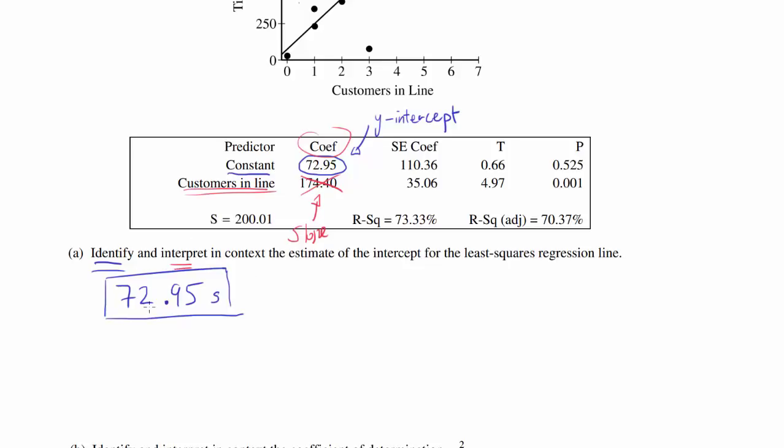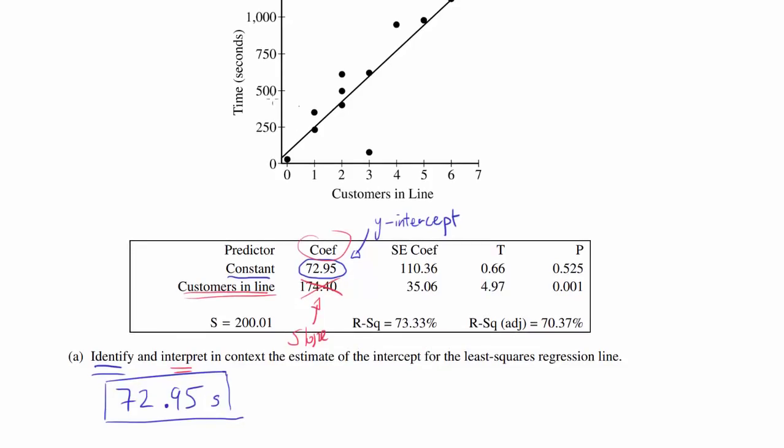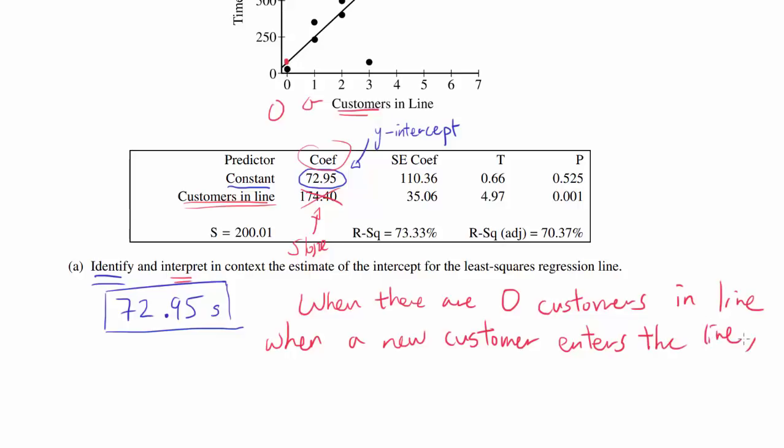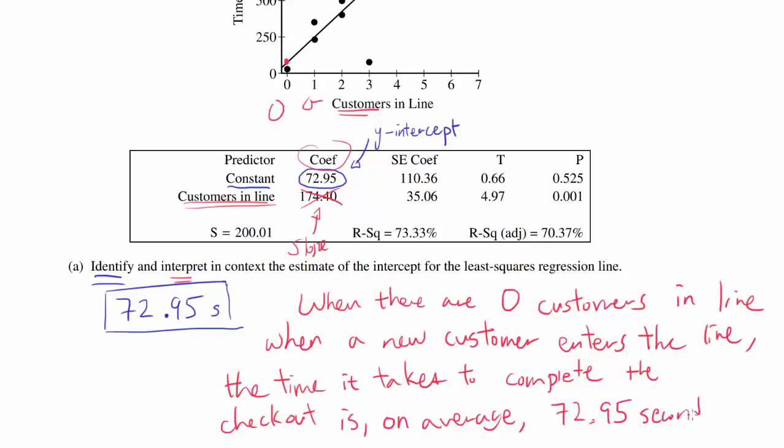And we want to interpret this value in context. Well, what's the y-intercept? The y-intercept, in our case, is where the graph is hitting the time axis when the number of customers is zero. When we have zero customers, we are hitting the intercept. So we want to write: when there are zero customers in line, when a new customer enters the line, the time it takes to complete the checkout is, and you have to put something similar to on average, on average 72.95 seconds. So that's the answer for part A.